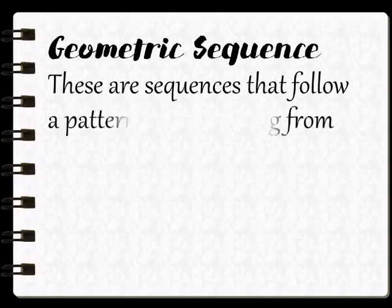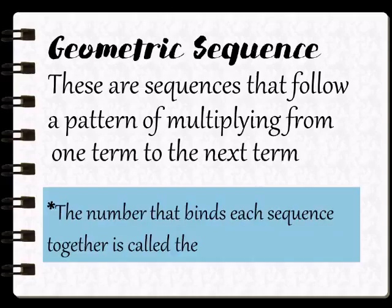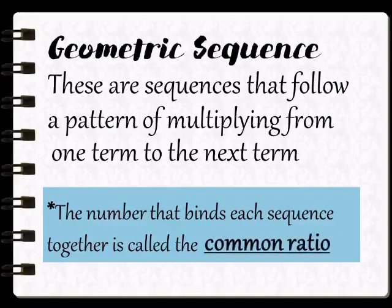These are sequences that follow a pattern of multiplying from one term to the next term. The number that binds each sequence together is called the common ratio. Ang common ratio ay ang ginagamit natin pang multiply. Mamaya, malalaman natin kung paano ito makakuha.